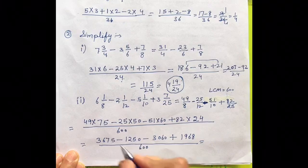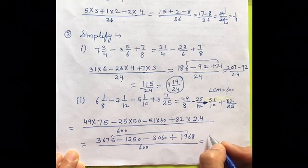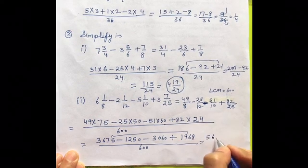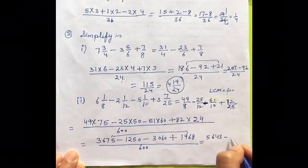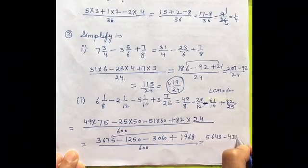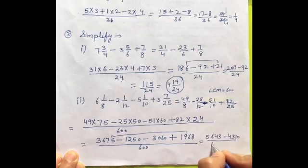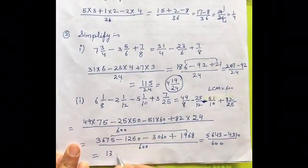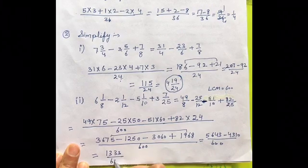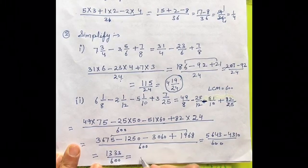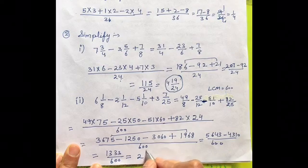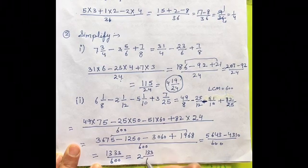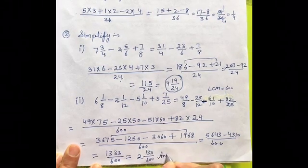Then, we will add up these two. We will get 5643 minus 4310 upon 600. Now, subtract these two. We will get 1333 upon 600. Write it into the mixed fraction. 600, 4 ja, 1200, 133 upon 600. So, this is your final answer.